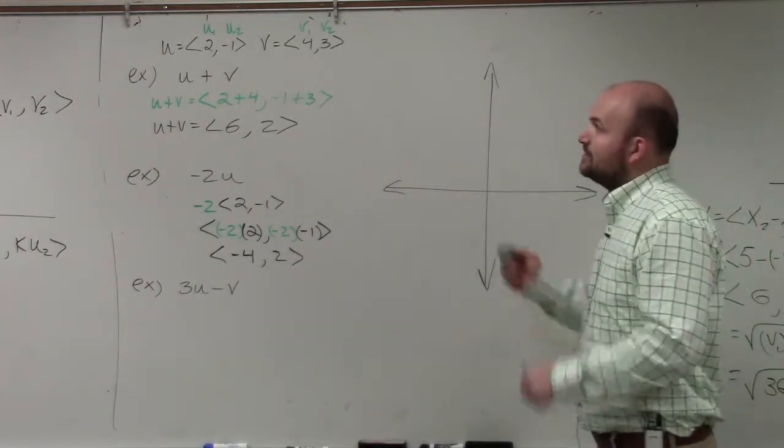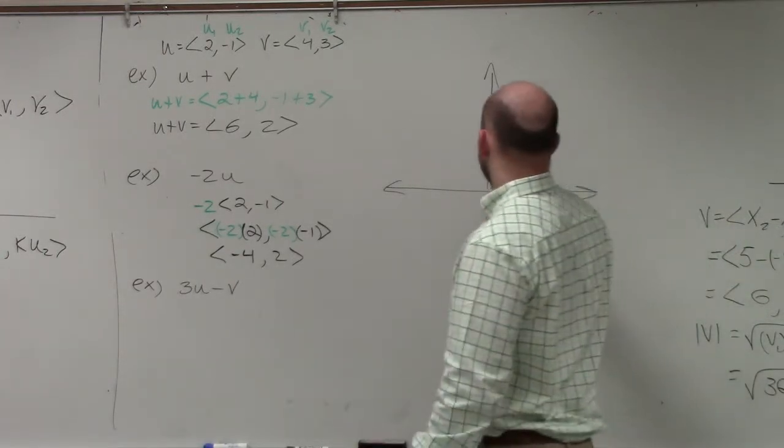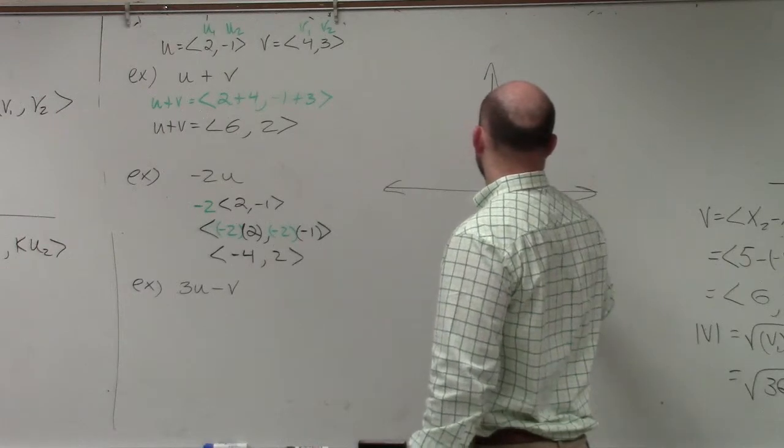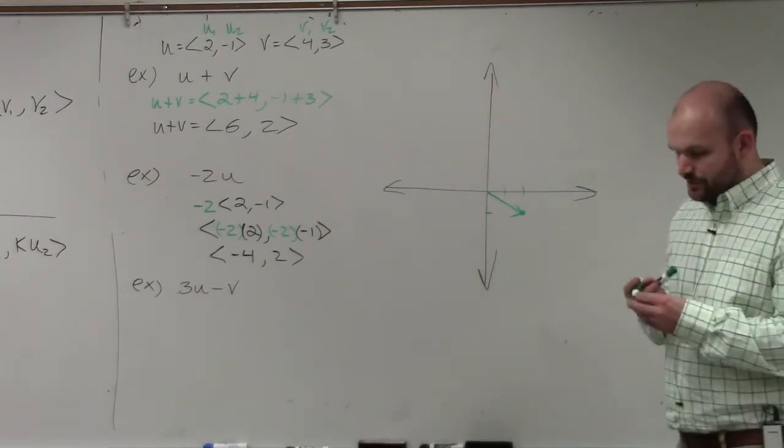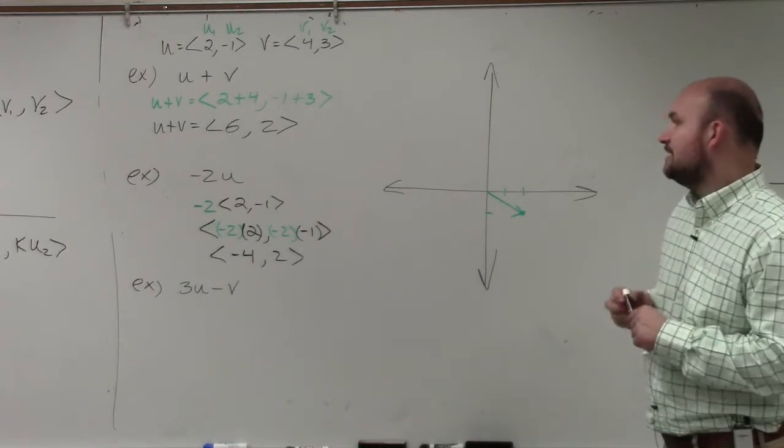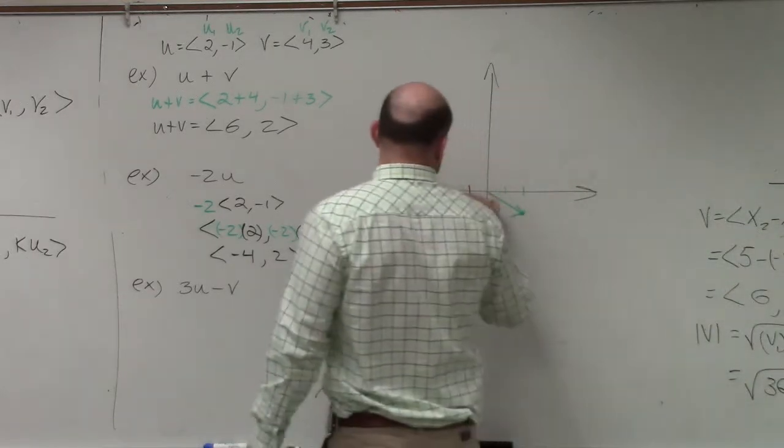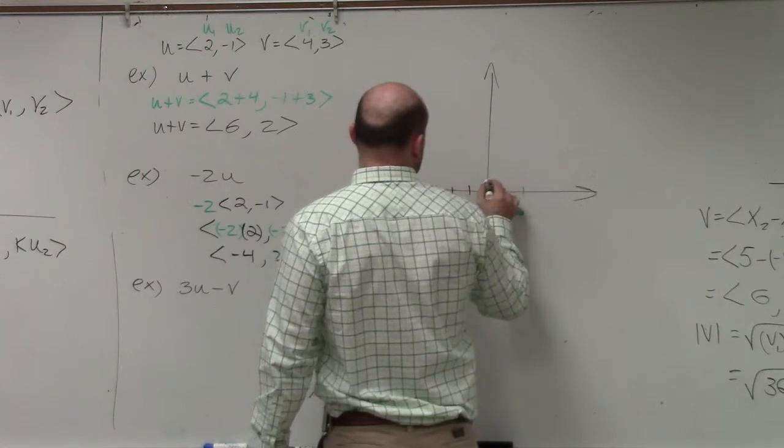So I wanted to ask you guys to graph u. So that would have been 1, 2, negative 1, which you're familiar with. And then negative 2u is going to be negative 4, 2. 1, 2, 3, 4, 1, 2.